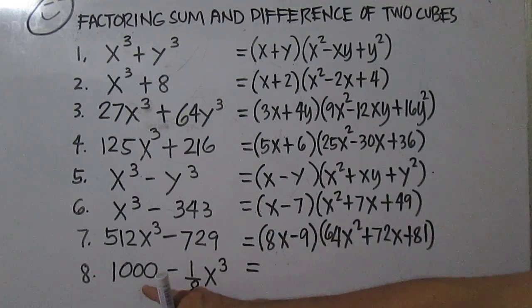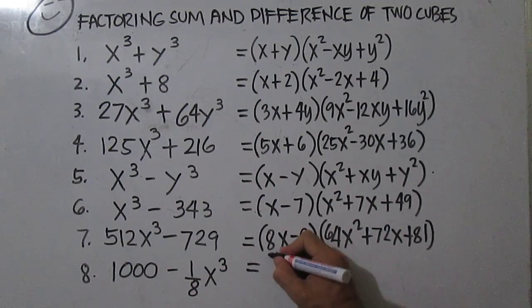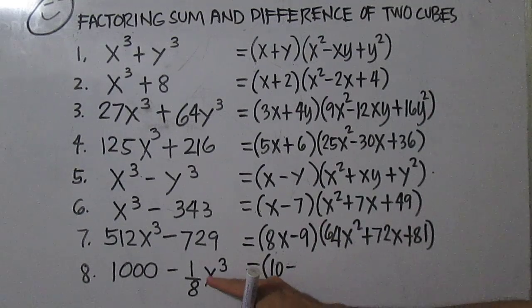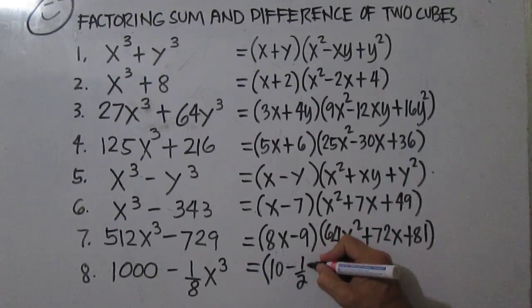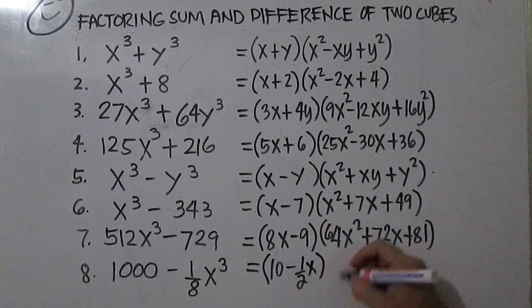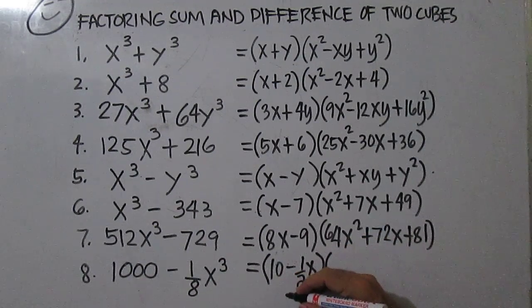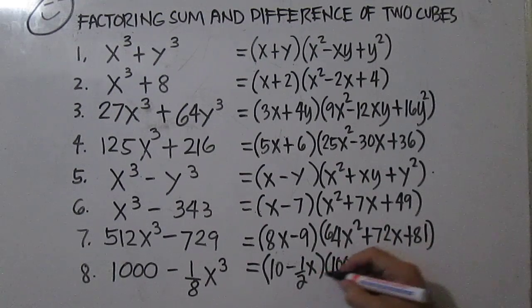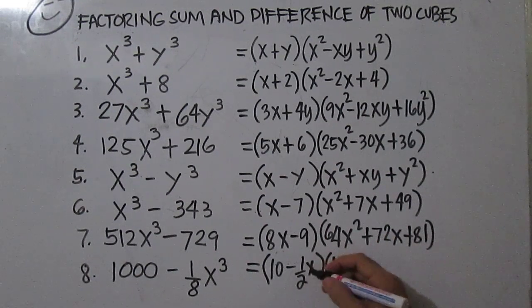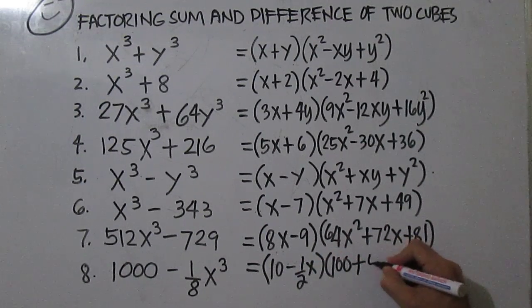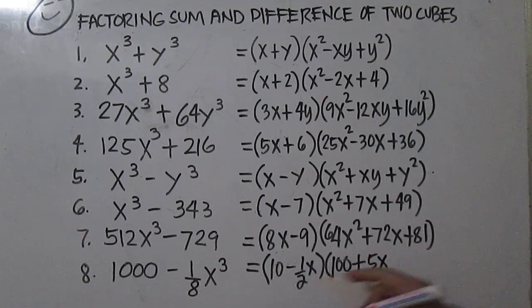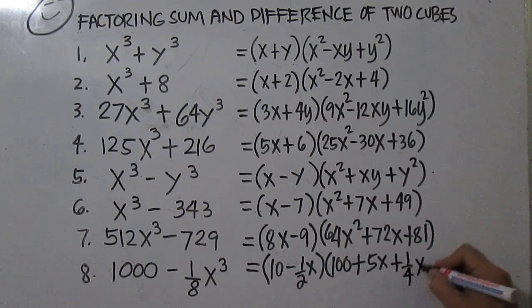Number 8: 1000 is 10 cubed, so the cube root of 1000 is 10, minus the cube root. Then square the second term — one-fourth x squared.